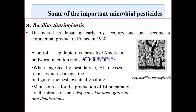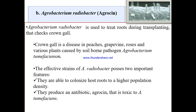BT preparations are produced by subspecies such as kurstaki, galleriae, and dendrolimus. Agrobacterium radiobacter is used to treat roots during transplanting to check crown galls. Effective strains of Agrobacterium radiobacter possess two important features: they are able to colonize host roots to high population density, and they produce an antibiotic, agrocin, which is toxic to Agrobacterium tumefaciens.